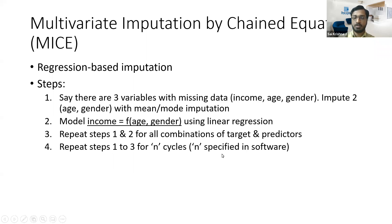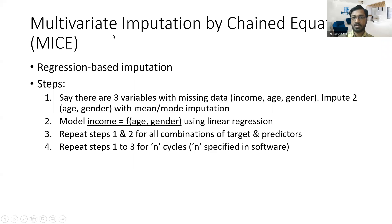You repeat the same iteration for multiple times using different combinations. That is what is called multivariate imputation by chained equation. It is called a chain equation because in the first iteration you predict the value of income, and in the second iteration that predicted variable can be considered as the input value. That is the MICE technique.